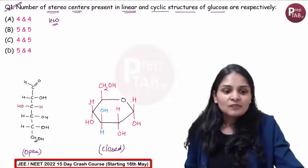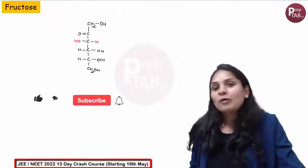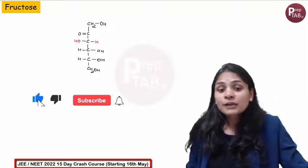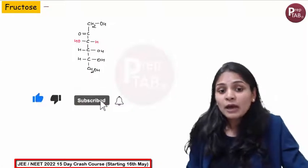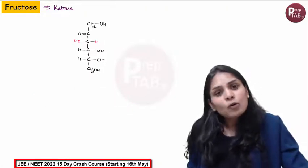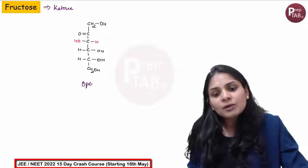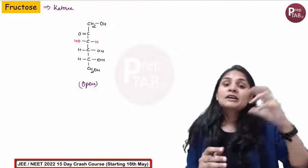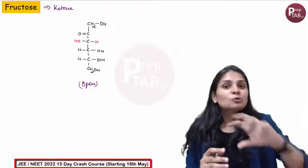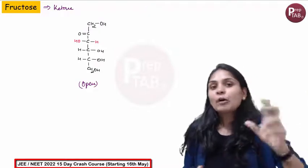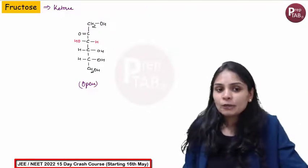Alright. Now coming to fructose. Fructose has a ketone group, which in the open chain form is a keto group. But fructose, same as glucose, goes into a cyclic form.